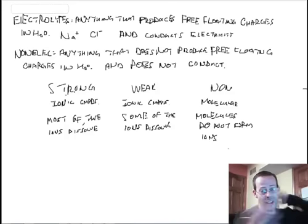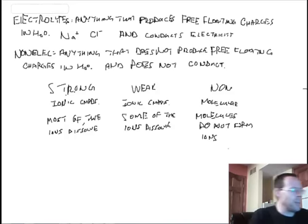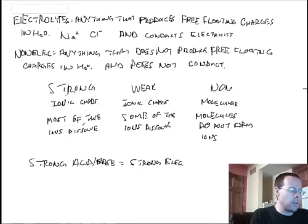We have strong, weak, and non. The very last thing we're going to talk about is we can have such things that have strong bases and weak bases. Similarly, we can have strong acids and weak acids. So if we have a strong acid, I'm just going to include this: strong acid or base is equal to strong electrolytes. Conversely, weak acids and weak bases are known as weak electrolytes.